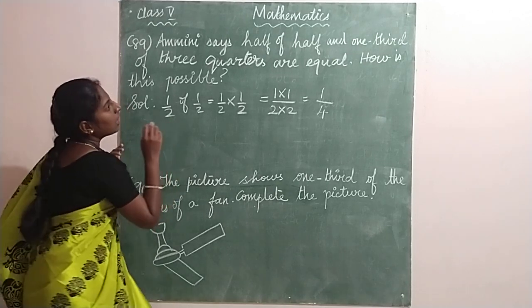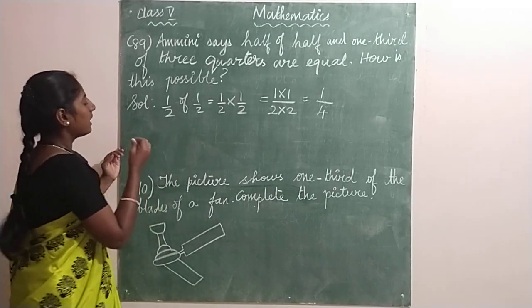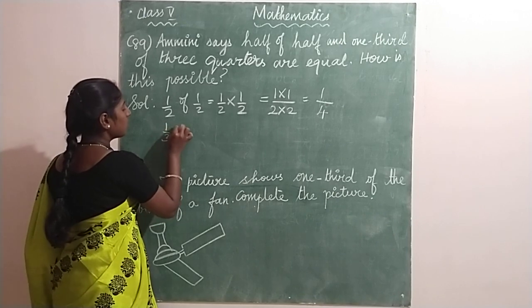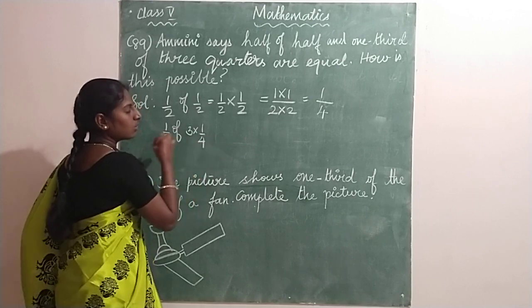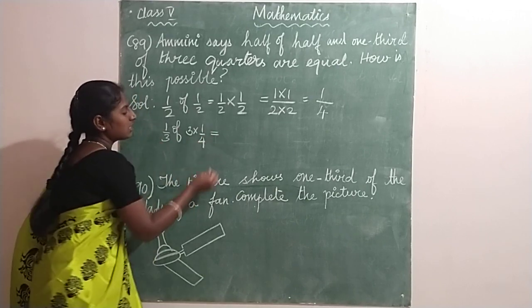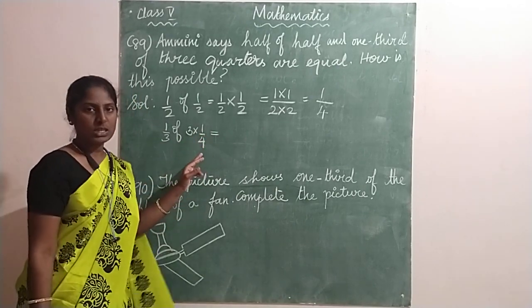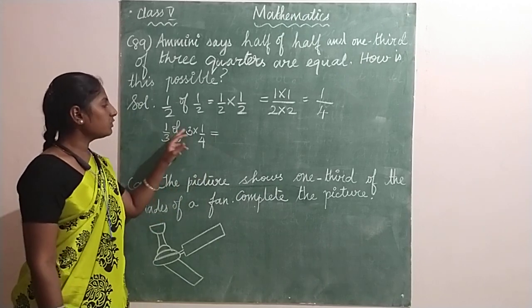Next one is one third of three quarters. That is one by three of three into one by four. Can you understand? Three quarters. One by four is known as quarter, and one third of three quarters.